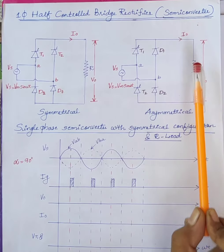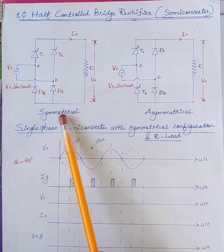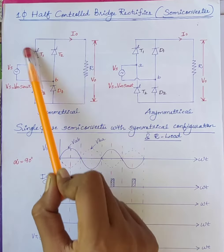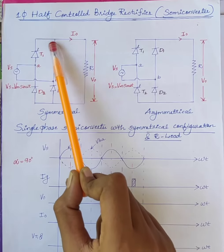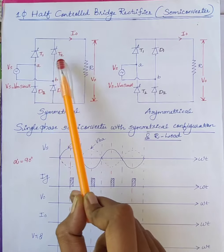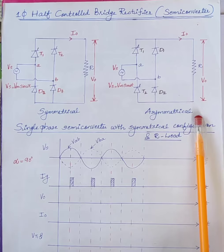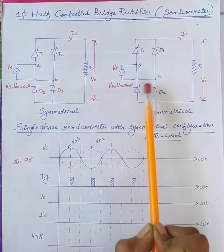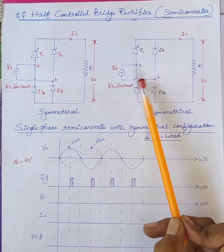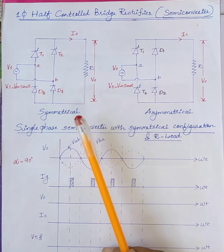It is classified into two types: symmetrical and asymmetrical configuration. Symmetrical configuration means the cathodes of two SCRs are at the same potential. Therefore, a single gate pulse can be used for triggering both the SCRs. Asymmetrical configuration means cathodes of two SCRs are at different potential. Now, we will discuss the semi converter with symmetrical configuration only.